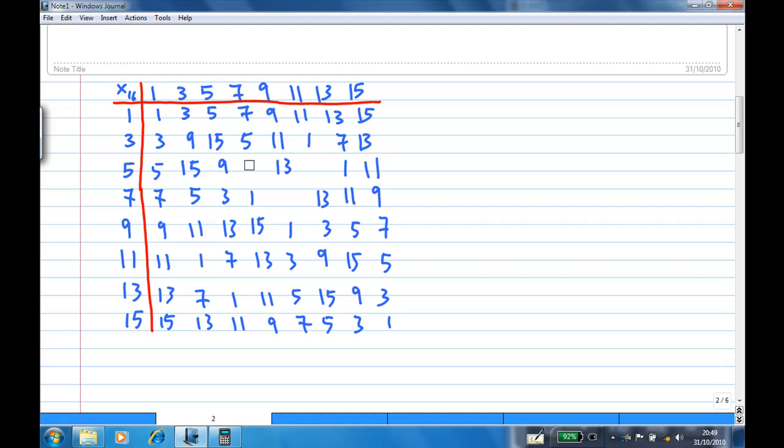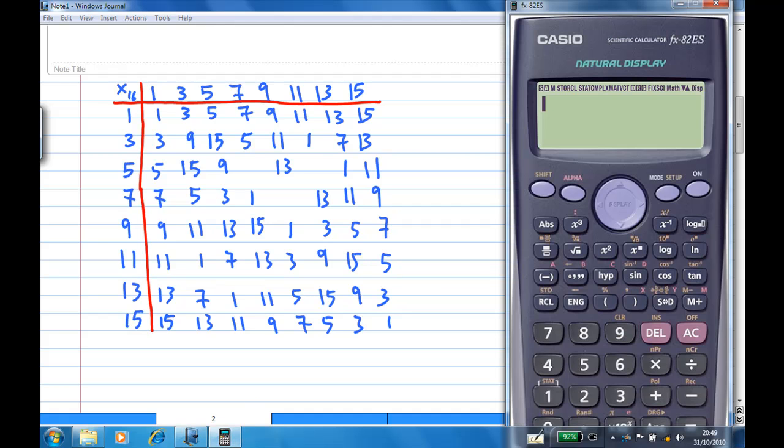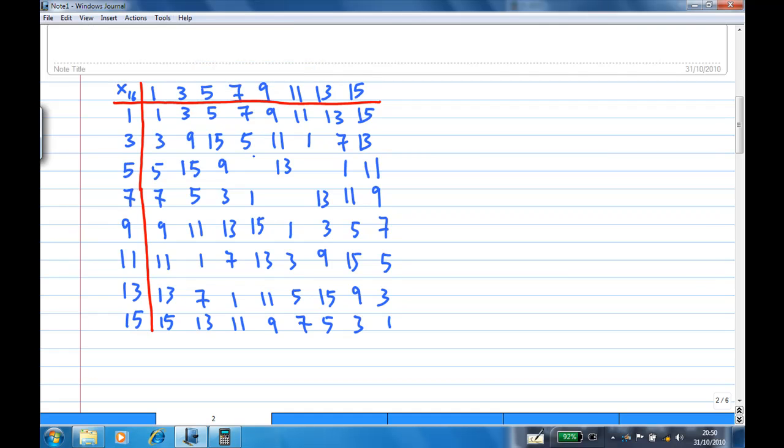For example, the first blank here is 5 times 7 in modular 16. So what is 5 times 7 in modular 16? Let's call my calculator. I have 5 times 7 and then divide by 16. So it's 35 over 16. Then convert this into a mixed fraction. The remainder is 3. Therefore, I know that this number here is going to be 3.